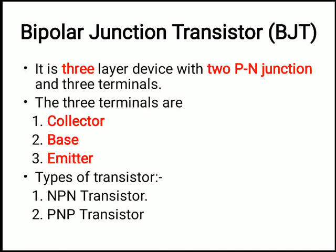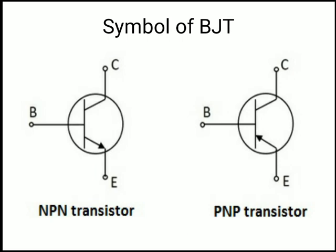Depending on the placement of P-type and N-type semiconductors, the BJT is divided into two types: the NPN transistor and the PNP transistor. In an NPN transistor, first there is N-type semiconductor, then P-type in the middle, then N-type again. In a PNP it is vice versa. You can see the symbols here — the upper terminal is the collector, the middle is the base, and the lower is the emitter.